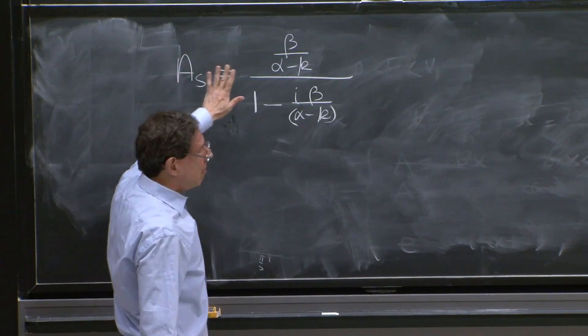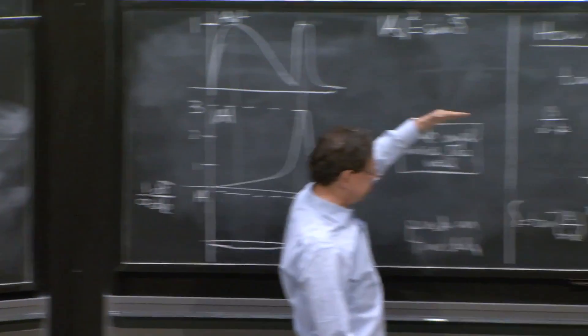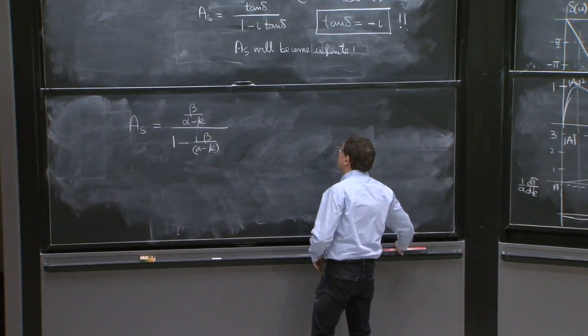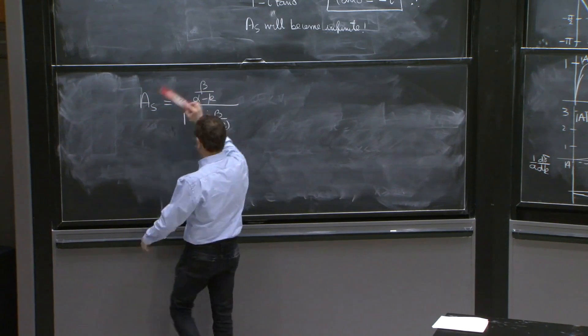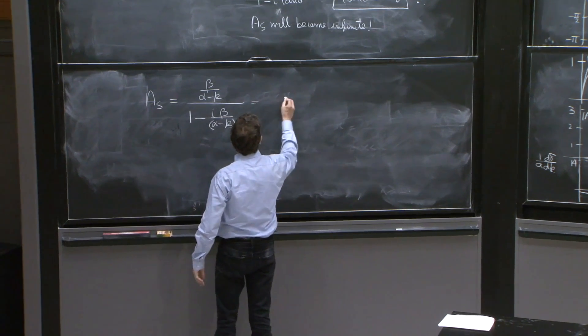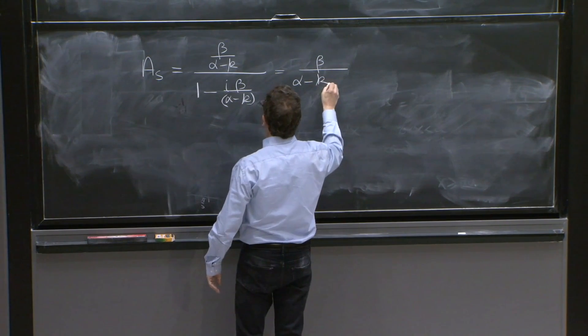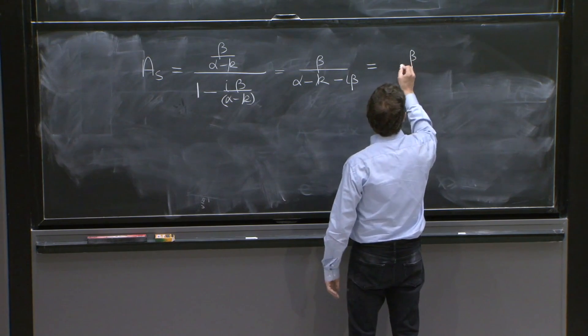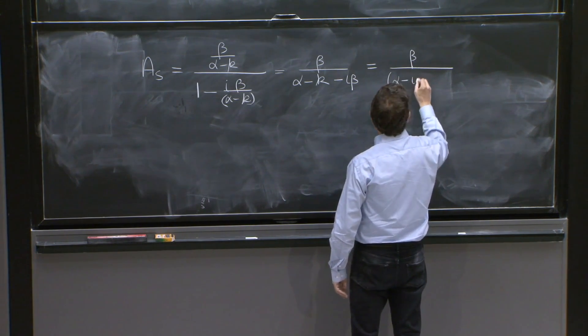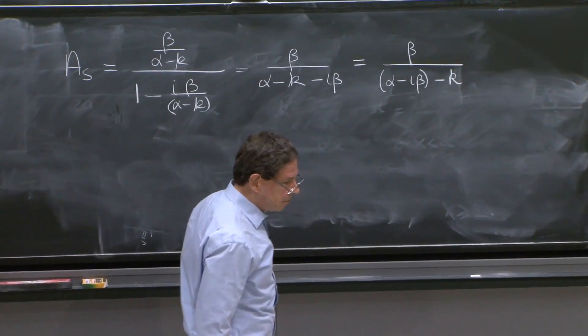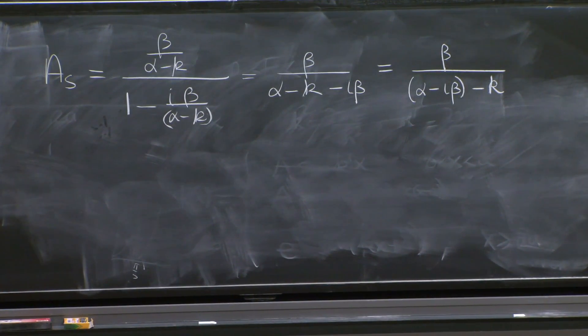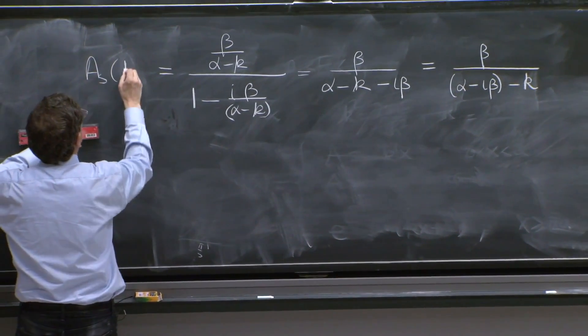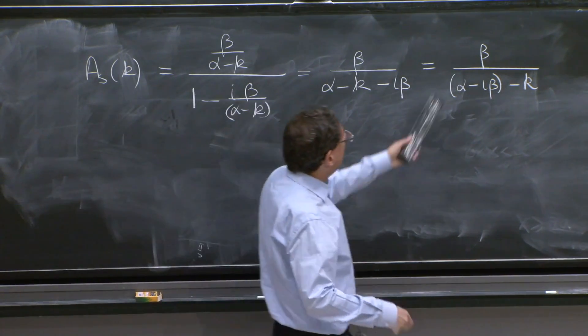That's fine. At this moment, there's nothing crazy about this, because this is something you all agree. Nobody complained about this formula. So As is given by that formula. That's also legal math so far. So we'll have this. And then let's simplify it a little bit. This is beta over alpha minus k minus i beta. So this is still beta over alpha minus i beta minus k. So OK, we usually would plot As as a function of k. That's what we're trying to do. It's a function of k. And now here is the formula for As as a function of k.